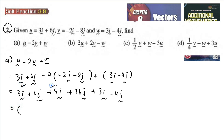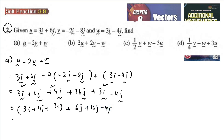After expanding, we group the i terms and j terms together. For i: 3i plus 4i plus 3i. For j: 6j plus 16j minus 4j. So 3 plus 4 plus 3 gives 10i, and 6 plus 16 minus 4 gives 18j. The answer is 10i plus 18j.